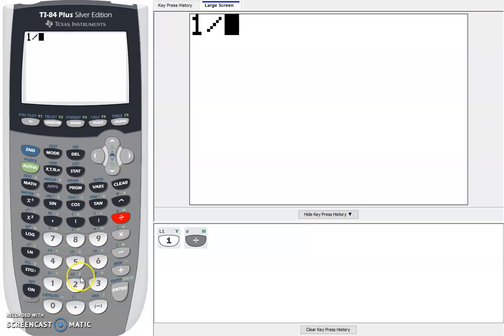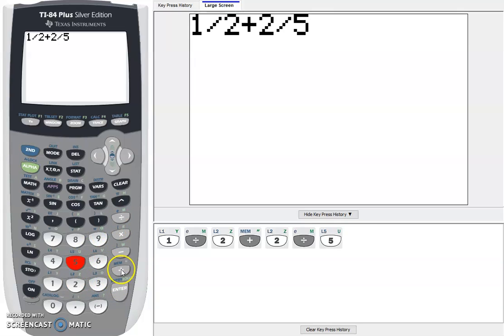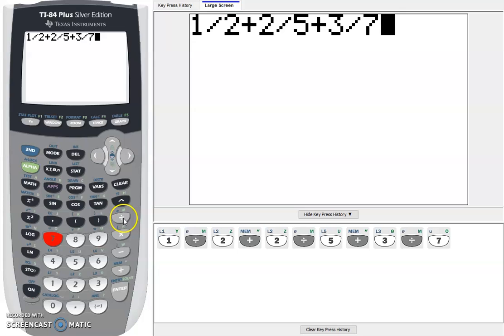The first thing is we're going to do 1 divided by 2, or 1 half, plus the fraction 2 fifths, so 2 divided by 5, plus the fraction 3 sevenths. We're using a division symbol because a fraction is division.